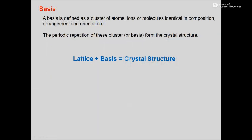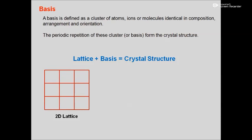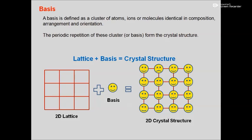The basis is defined as a cluster of atoms, ions, or molecules of identical composition, arrangement, and orientation situated at any particular lattice point. The repetition of this cluster ultimately forms a crystal structure. So: lattice plus basis is equivalent to crystal structure. This is illustrated in 2D where the lattice is a net-like structure, and adding a basis gives you a 2D crystal structure.